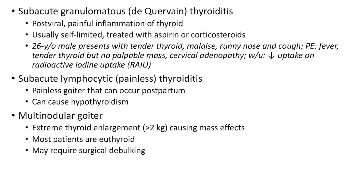Now let us see about subacute granulomatous thyroiditis, or de Quervain's thyroiditis. It is post-viral painful inflammation of the thyroid. It is usually self-limited and treated with aspirin or corticosteroids. Clinical case: A 26-year-old male presents with tender thyroid, malaise, runny nose and cough. Physical examination shows fever, tender thyroid but no palpable mass, and cervical adenopathy. Workup shows decreased uptake on radioactive iodine uptake scan. This is a classic case of de Quervain's thyroiditis — the upper respiratory tract infection has led to painful inflammation of the thyroid.